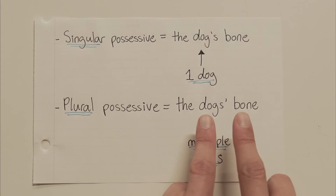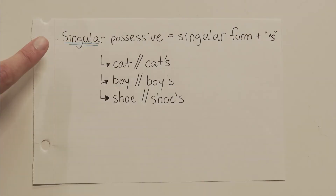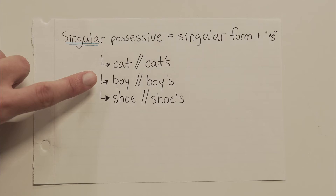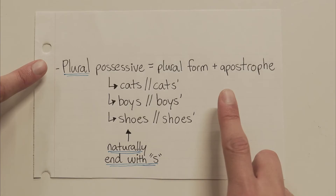Except hold on — what if our plural word doesn't end with s? What if we have multiple people who have very big houses? Here's the rule. You already know that to make a noun singular possessive, you just write the singular form and add apostrophe s in all situations. Cat becomes cat's. Boy becomes boy's. Shoe becomes shoe's. And you now know that to make a plural possessive noun, you just write the plural form of the word and add an apostrophe at the end.